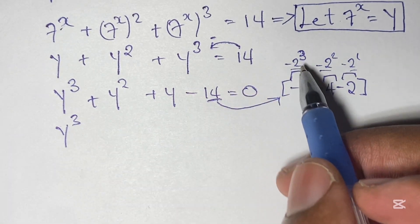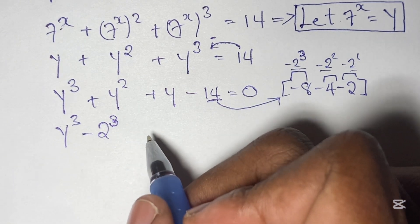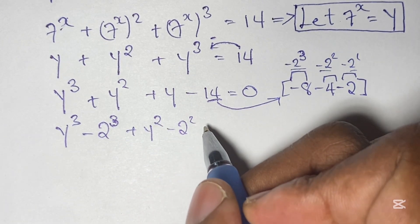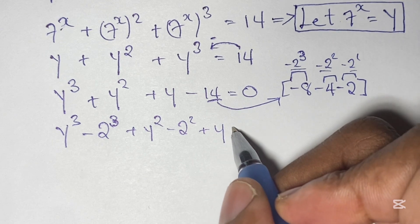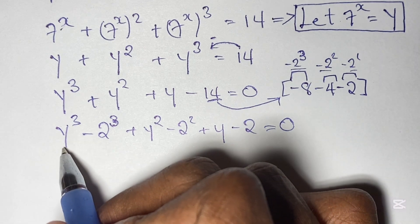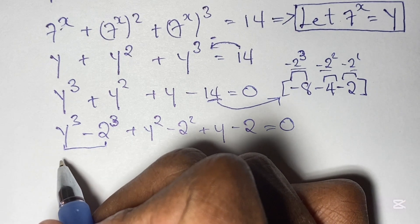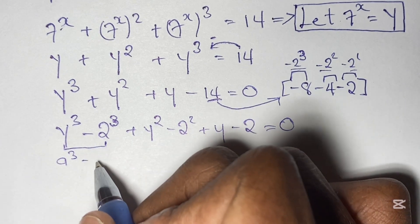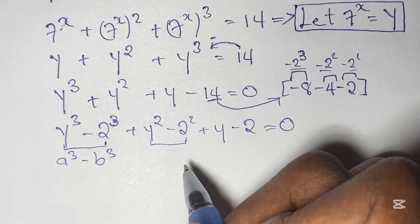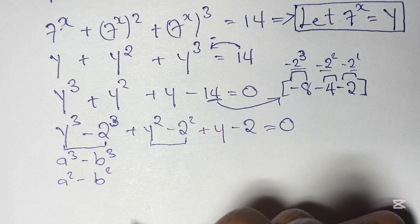So we pair y cubed with negative 2 to the power of 3, giving us y cubed minus 2 cubed. Then we pair y squared with negative 2 squared, giving y squared minus 2 squared. Then we have plus y minus 2, all equal to 0. We identify y cubed minus 2 cubed as the difference of two cubes, and y squared minus 2 squared as the difference of two squares.